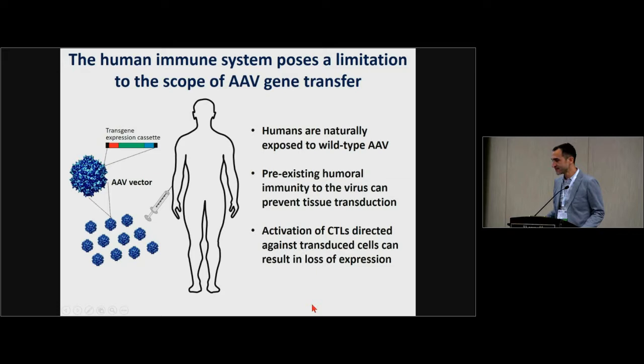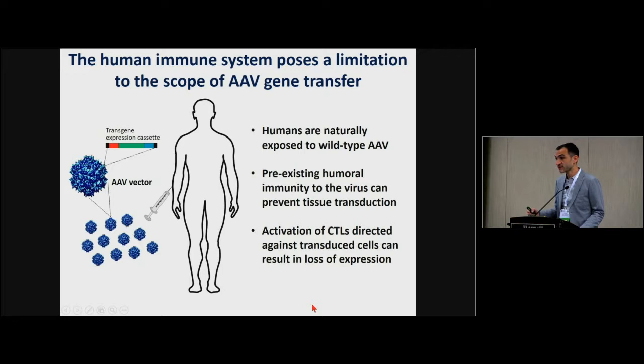The topic of today is to discuss immune responses to AAV, focusing particularly on T-cell immunity to the vector. Three main points: humans are naturally exposed to wild-type AAV, so we have pre-existing humoral immunity; we need to pre-screen subjects before inclusion in clinical trials to make sure the vector is not neutralized by pre-existing antibodies; and we observed in multiple trials that activation of CTLs in the context of AAV gene transfer can lead to loss of transgene expression and short-lived efficacy.